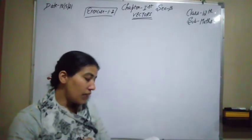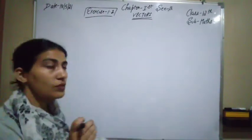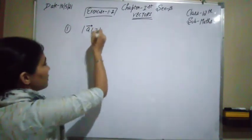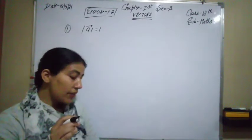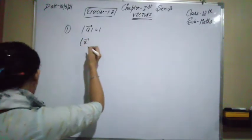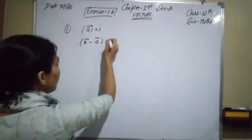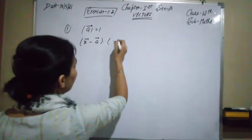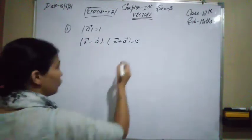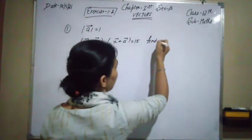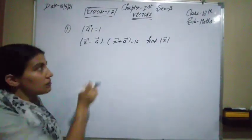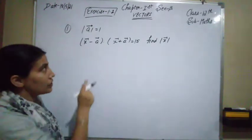In the first question, it is given that a vector is a unit vector, which means its magnitude is equal to 1. The expression given is (x⃗ − a⃗) · (x⃗ + a⃗) = 15, and we have to find out the magnitude of x⃗.